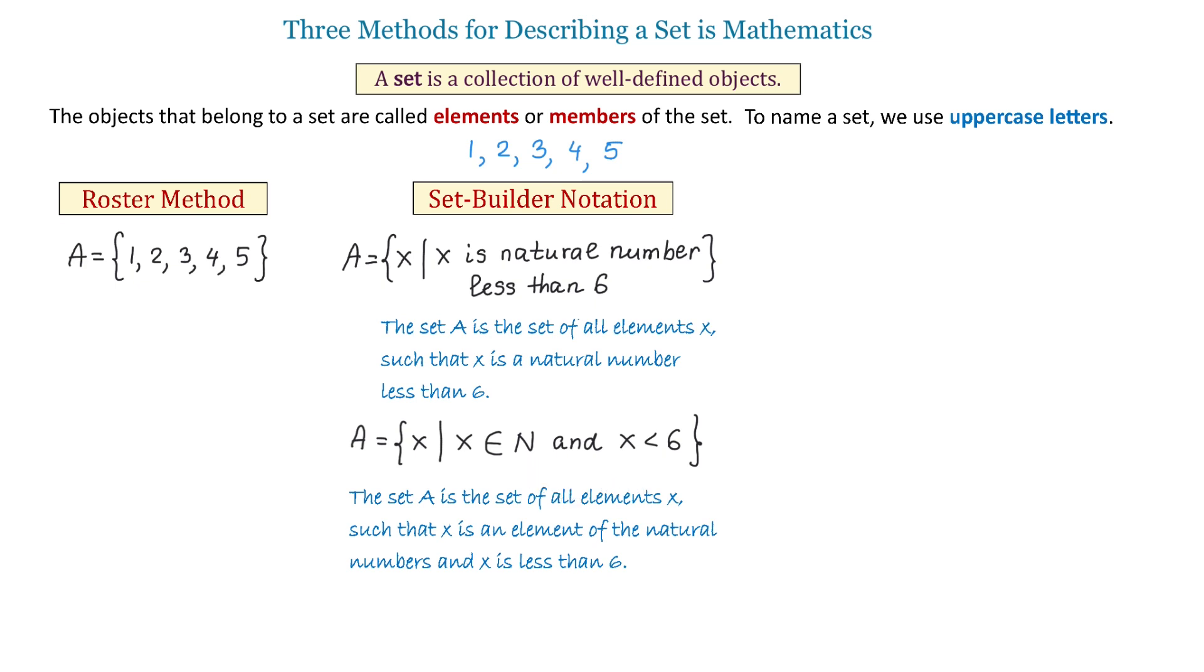And now, the last method is the word description. With this method, we use words to describe the set. For example, we can write that set A is the set of natural numbers less than 6.